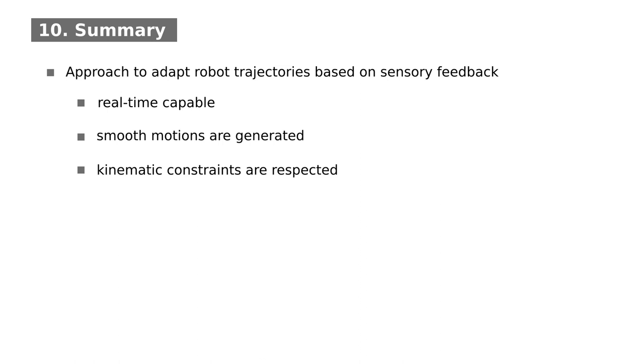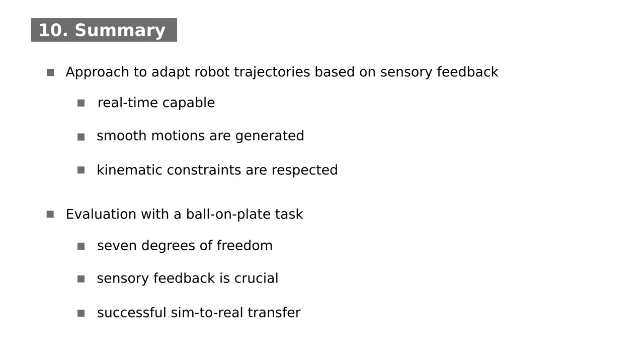In summary, we presented a real-time capable approach to learn online adaptations based on sensory feedback. Our technique produces smooth motions and ensures that kinematic constraints are respected. As part of our evaluation, we trained a neural network to predict online adaptations for a 7-DOF ball-on-plate task. We showed that sensory feedback is essential and successfully transferred a policy from simulation to a real robot.